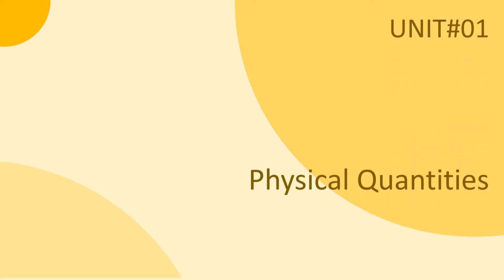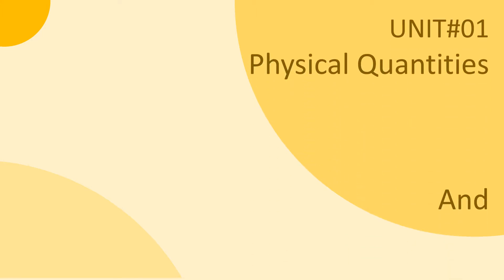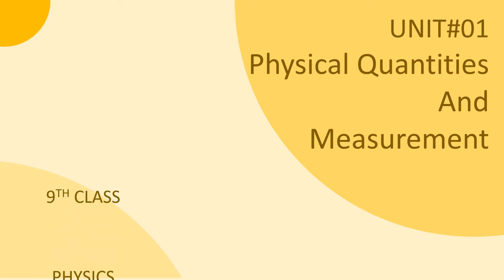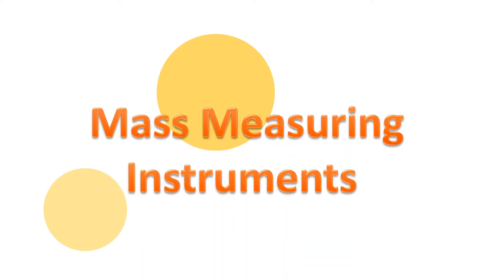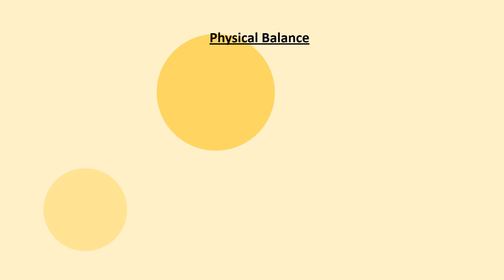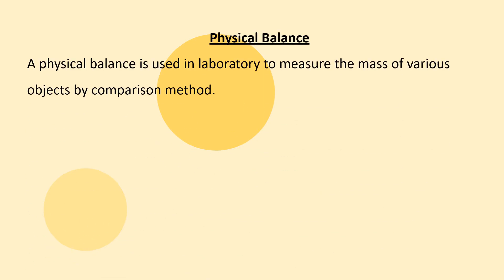Assalamualaikum students, unit number one: physical quantities and measurements. The first mass measuring instrument is the physical balance, which is used in the laboratory. The mass of various objects is measured by the comparison method. We have studied that mass is measured in kilograms.